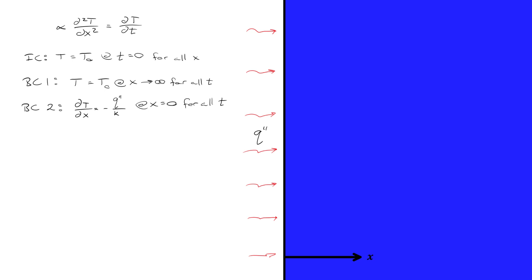A scenario like this might occur if there was a flame imparting, say, a thousand watts per square meter at the surface. Another scenario might be frictional effects — another surface rubbing over this one with a certain pressure and speed, imparting a steady heat flux over time. You could use this to model temperature as a function of time for any position x.